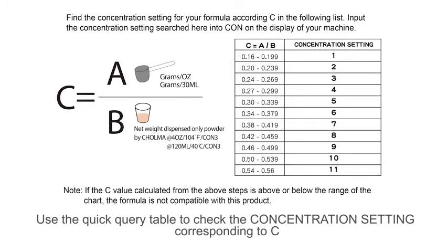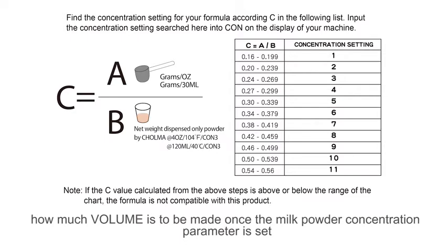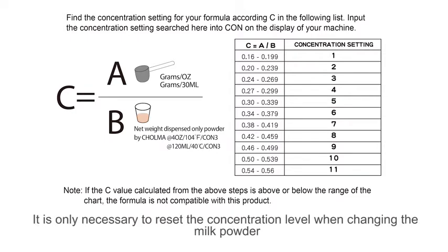Use the quick query table to check the concentration setting corresponding to C. Please note that the concentration level should remain unchanged no matter how much volume is to be made once the milk powder concentration parameter is set. It is only necessary to reset the concentration level when changing the milk powder.